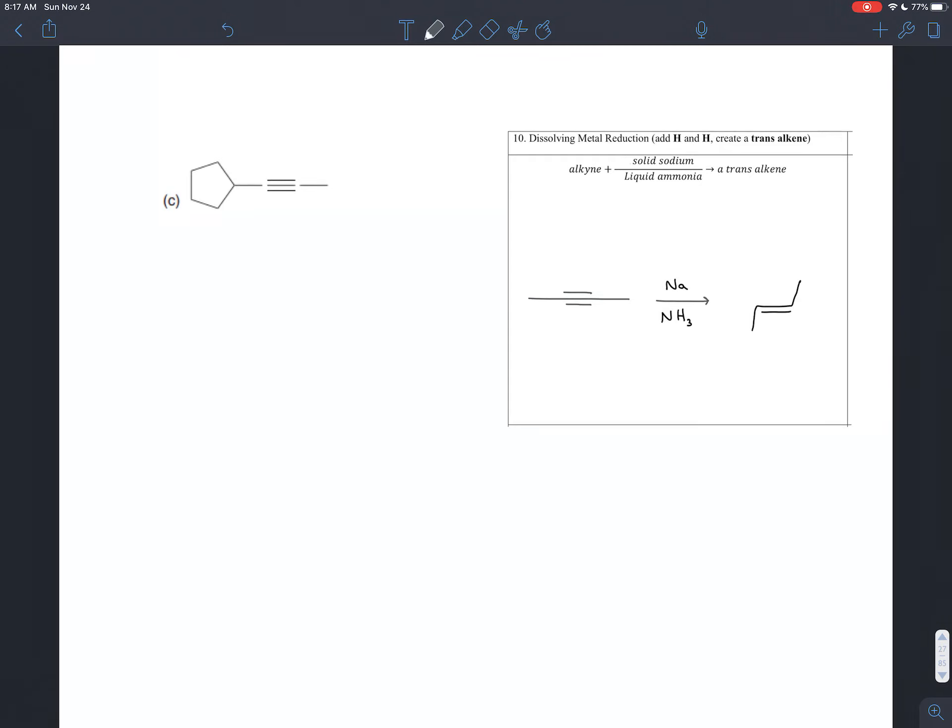Again, they're asking us what would happen to this if you dunked it in some liquid ammonia that had solid sodium in it. And we have an alkyne, it's going to turn that alkyne into a trans alkene. So we can start with that. We can take the triple bond and draw it just as a double bond. And we know that whatever else happens, we're going to have a branch going up in one direction and down in the other, so that it's trans. So that the two branches coming off of the alkyne are going in opposite directions.